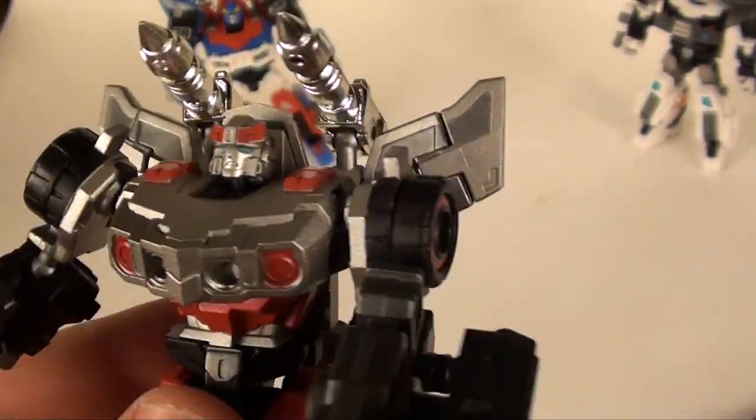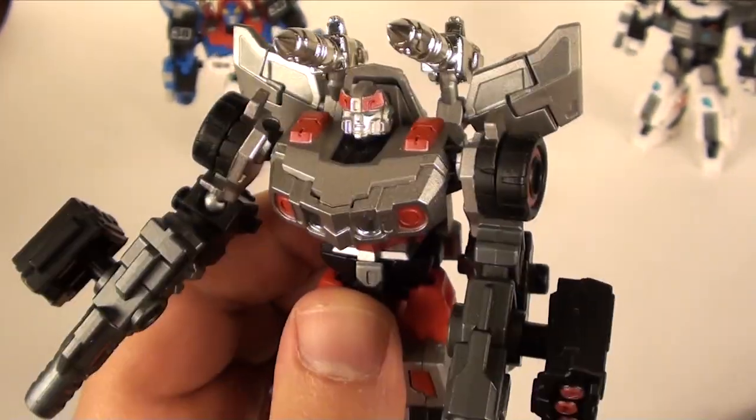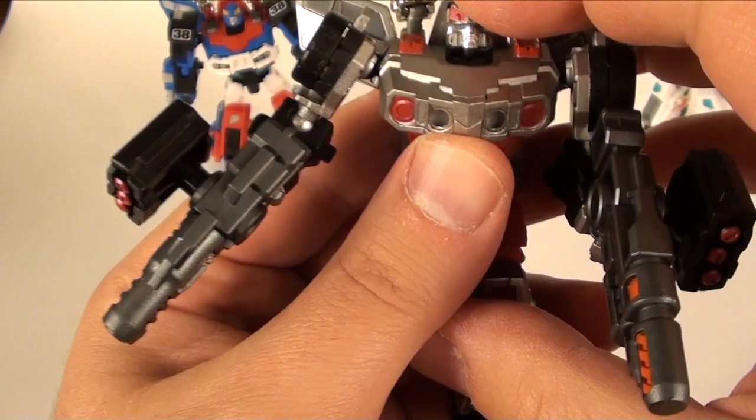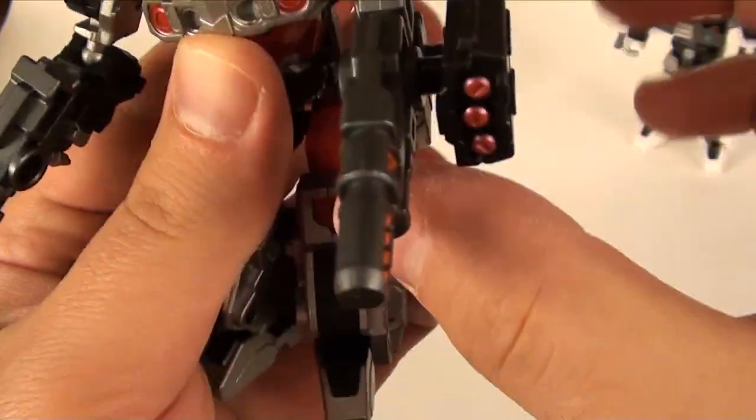He doesn't have any of the guns. Then we got the more base form Blue Streak, Silver Streak right here, who has this real stunning silver paint on him. I gotta give him credit for that. Let's look at the articulation.